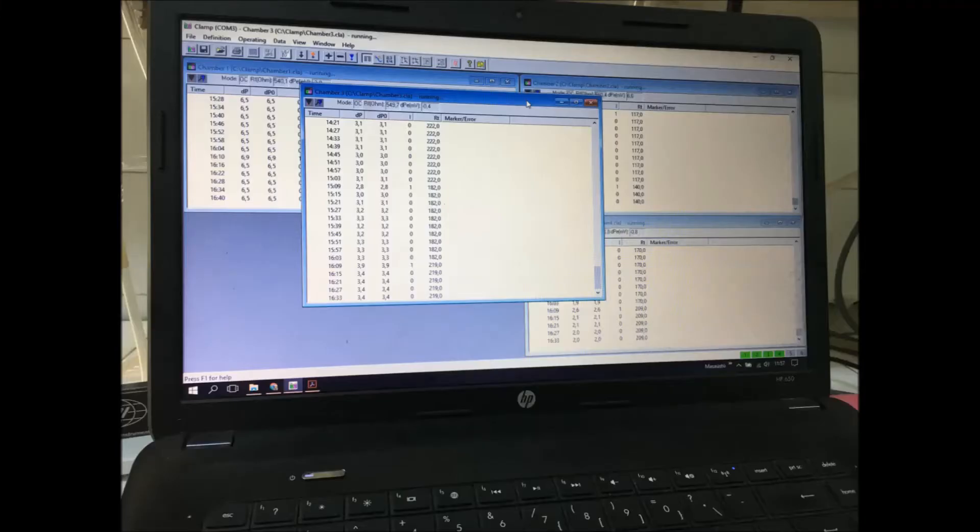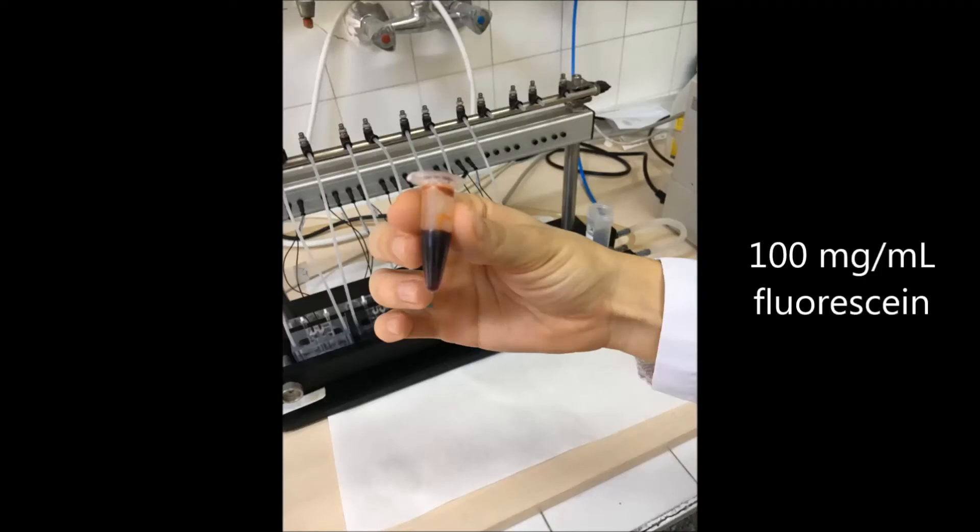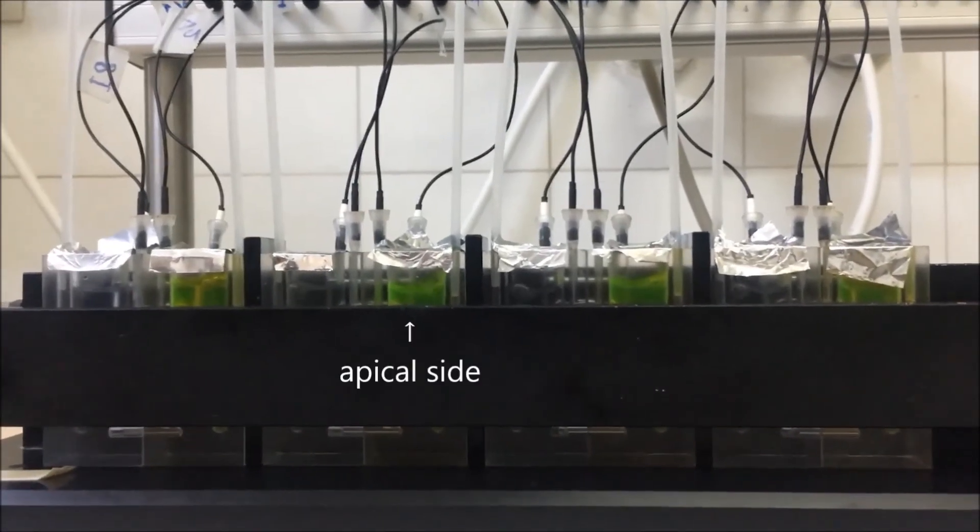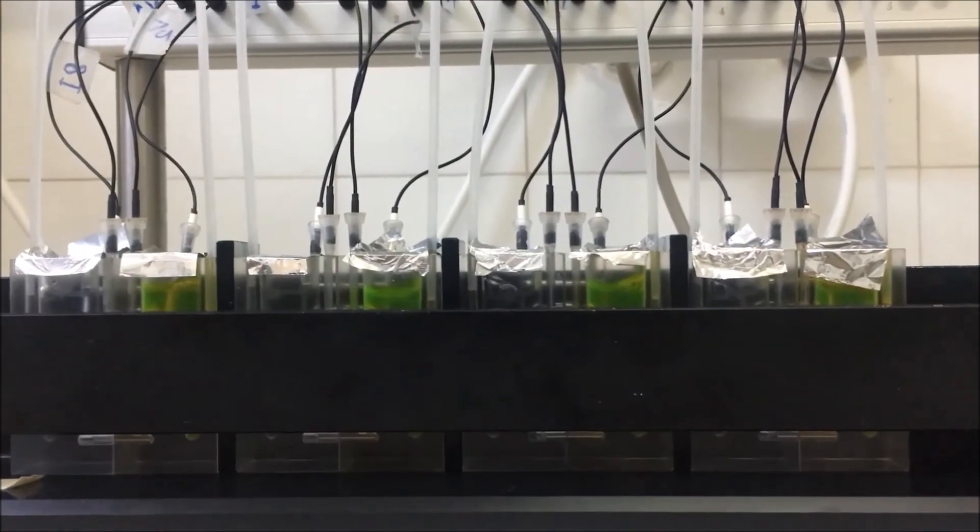The system automatically records the transepithelial resistance. A stock 100 mg per milliliter fluorescein should be prepared to measure epithelial permeability. 30 microliters of fluorescein is added to the apical side of each chamber 30 minutes after the mounting.